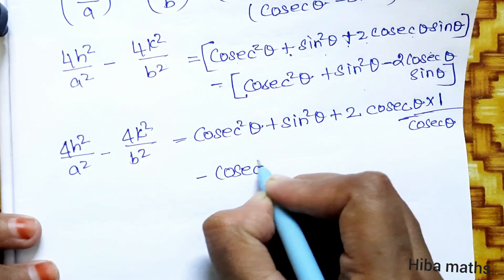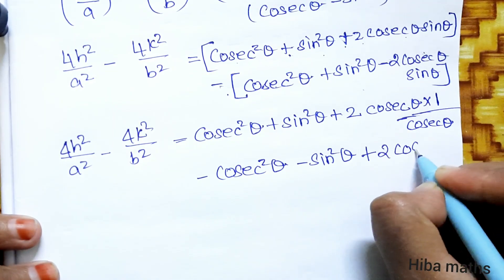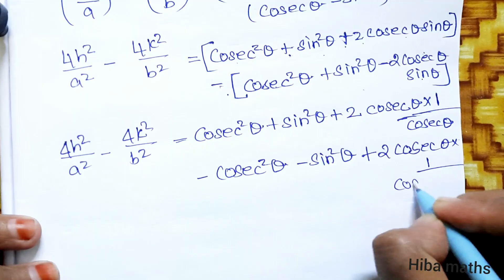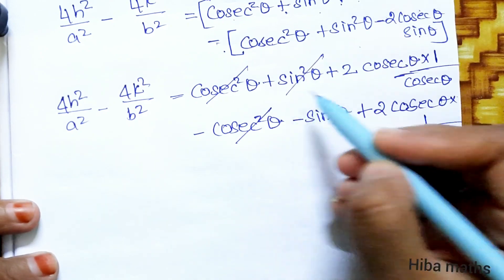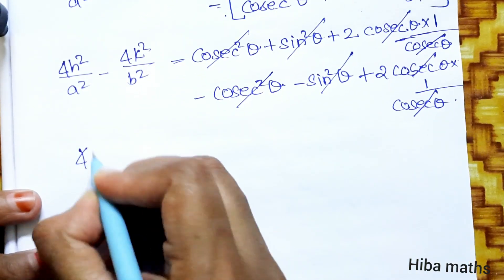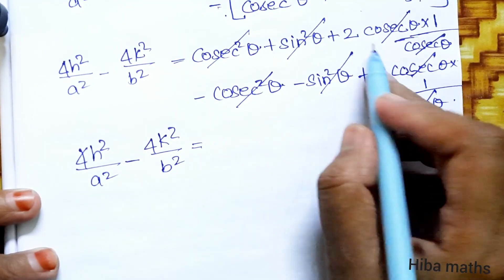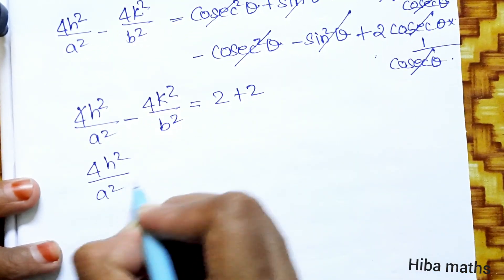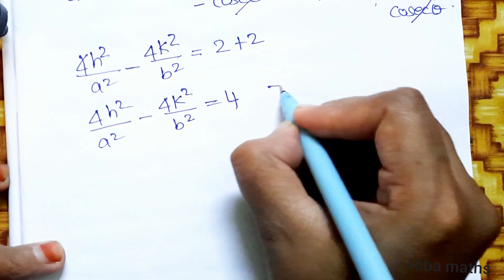After cancellation: plus cos²θ minus cos²θ cancel, plus sin²θ minus sin²θ cancel. The remaining terms give 2 + 2 = 4. So 4h²/a² - 4k²/b² = 4.